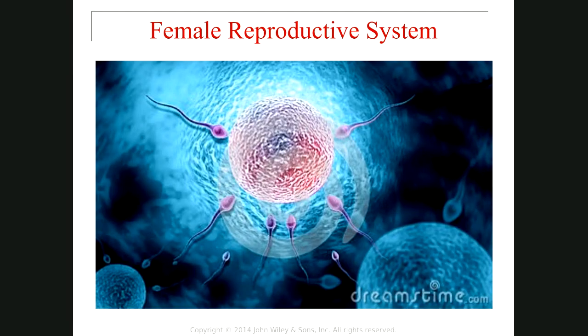Today I want to talk about the female reproductive system. In this picture, you can see the secondary oocyte and these are the sperms. You need to know that only one sperm can penetrate the secondary oocyte and do fertilization. We don't have polyspermy at the time of fertilization, and I will talk about it later.